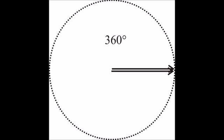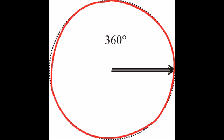Let's say you've just 360 no-scoped someone in a match of Call of Duty Modern Warfare 2. The length of the circle that you made when you spun around is called a circumference.